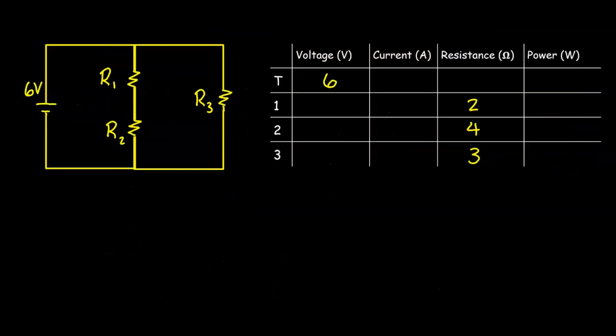Now let's take a look at another combination circuit where we have a series branch within a parallel circuit. This is also connected to a 6-volt battery, and it's got three resistors. The first thing we're going to do is find the equivalent resistance for R1 and R2. Since they are in series, we can just go ahead and add them up.